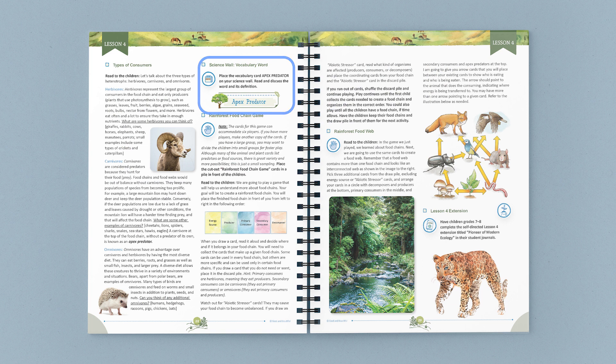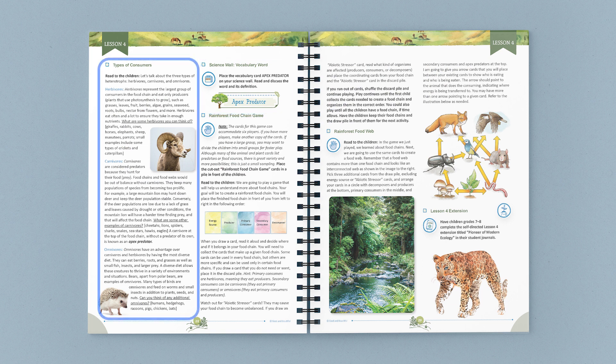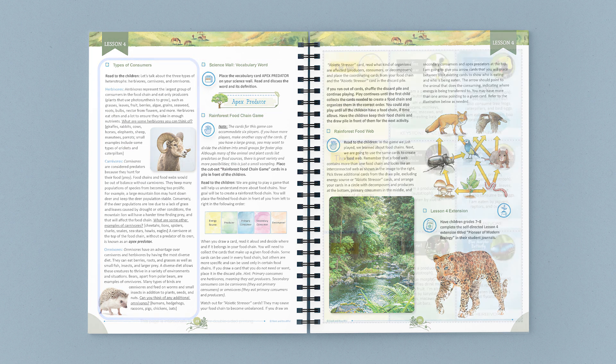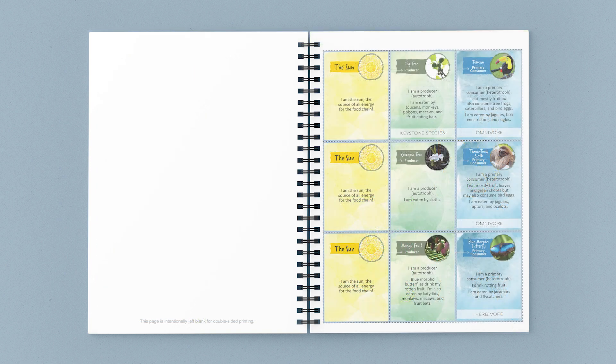Then children learn about the three types of consumers: herbivores, carnivores, and omnivores. Next, using the rainforest food chain cards in the coursebook, children play an engaging game that helps them better understand the food chain. Children also use the cards to create an interconnected food web, and this visual aid helps to cement what they are learning.